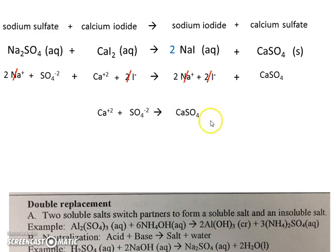So this would be the net ionic equation. And as you can see, a double replacement reaction really in a lot of ways is nothing more than a synthesis reaction.